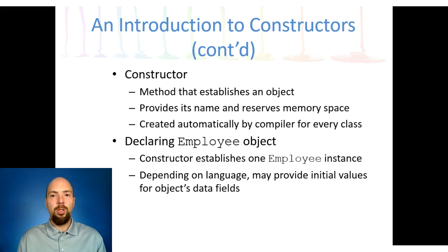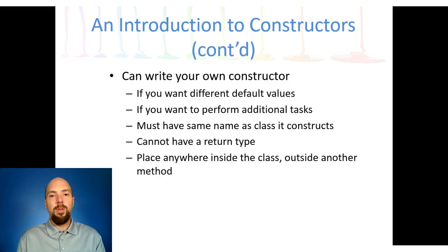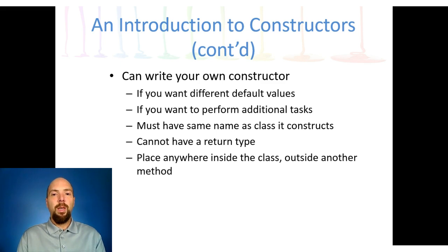In this example, we have an object called employee and the constructor establishes one employee instance. Depending on the language, it may provide initial values for all data fields — zeros for numerical values or nulls, and an empty double quote for text strings. We can either allow the system to pick default values automatically, or we can pick our own. For instance, we can specify that every employee created should have an initial pay rate of $7.50 an hour, and we can specify that in the constructor.